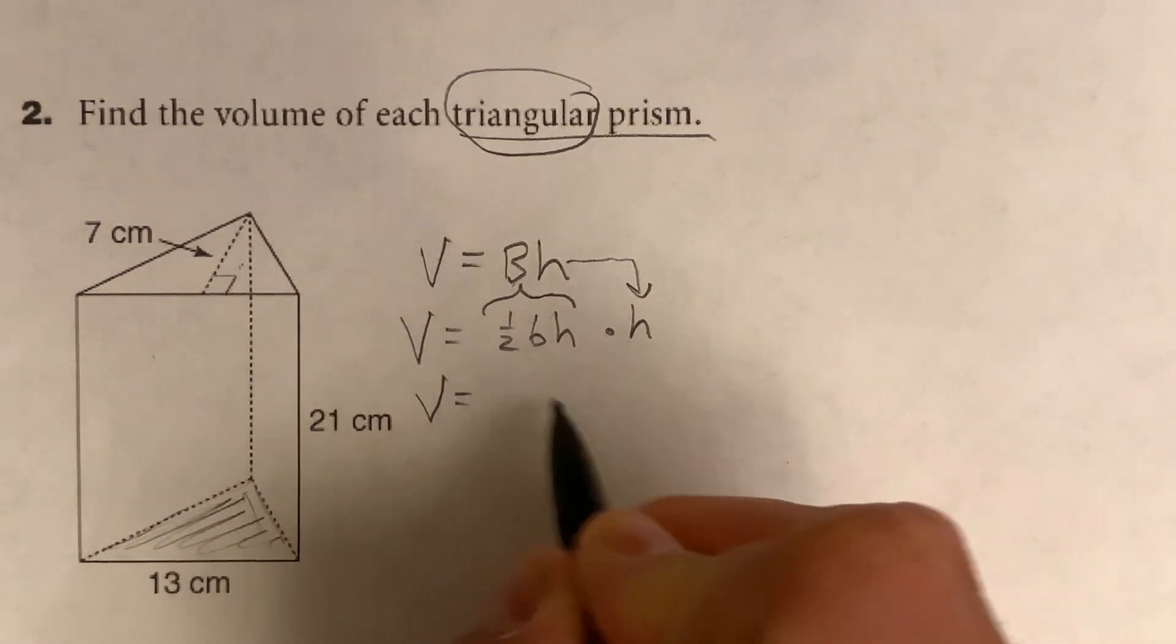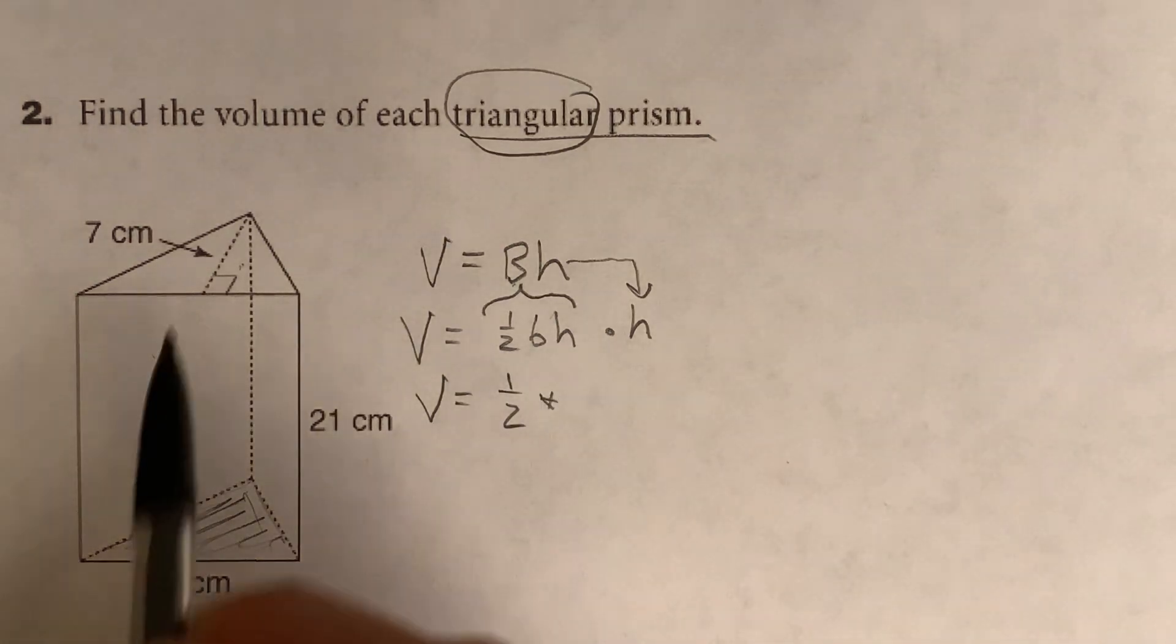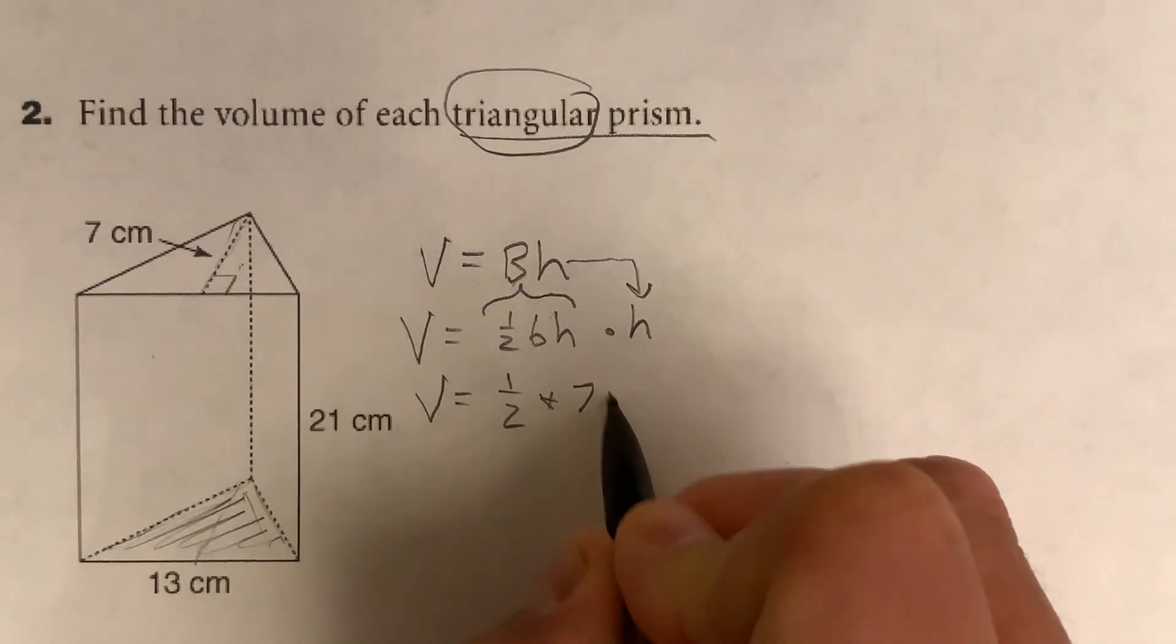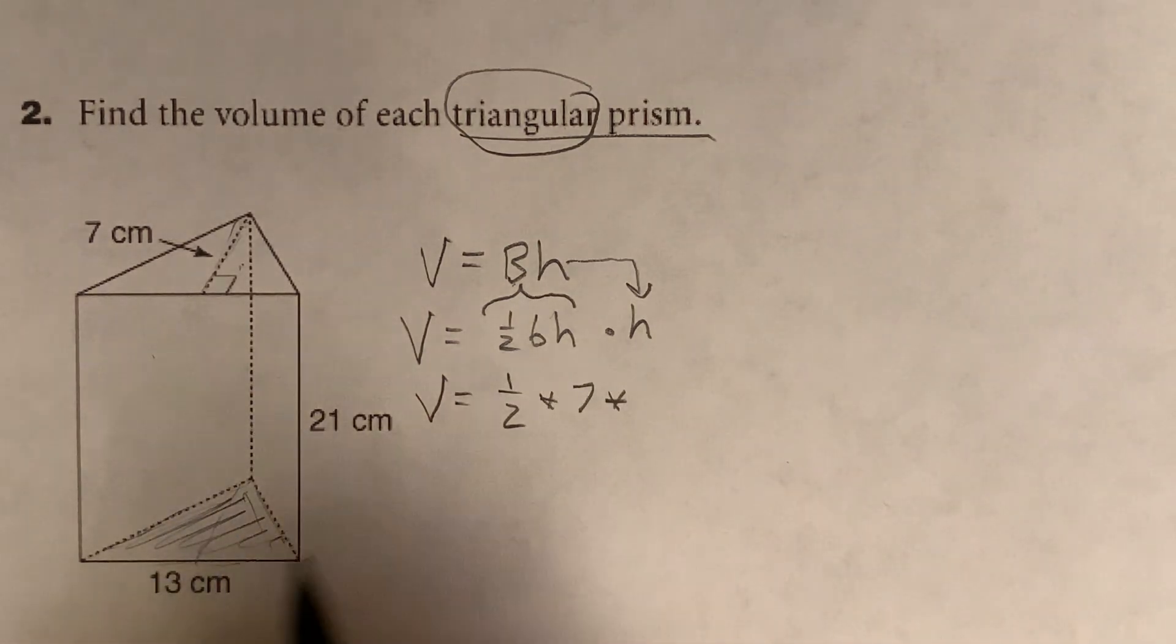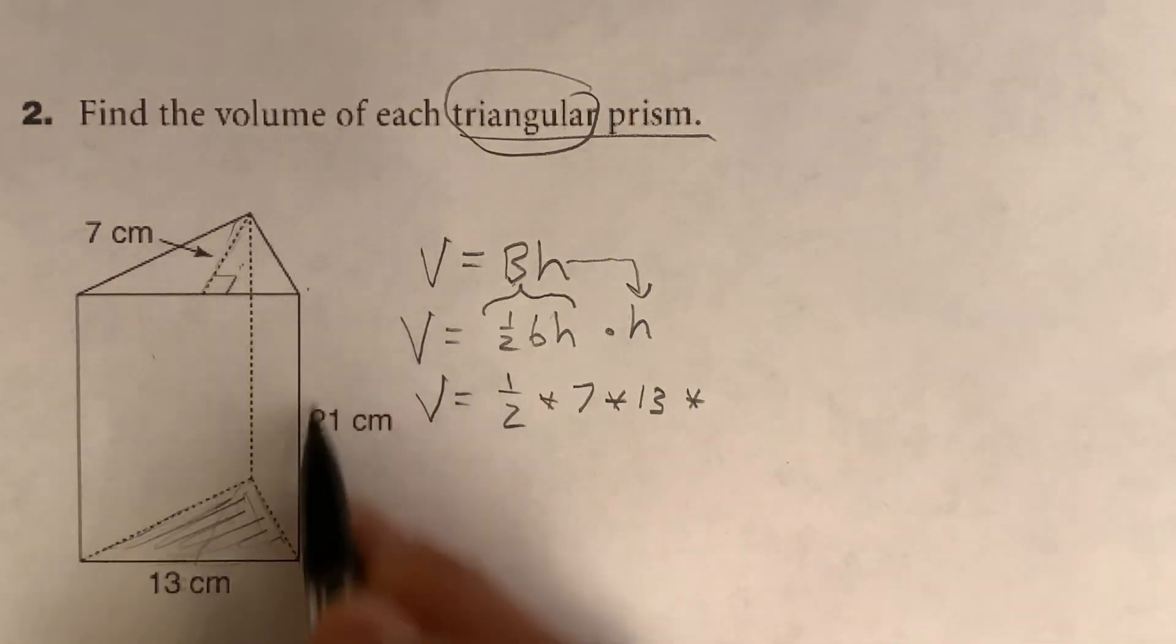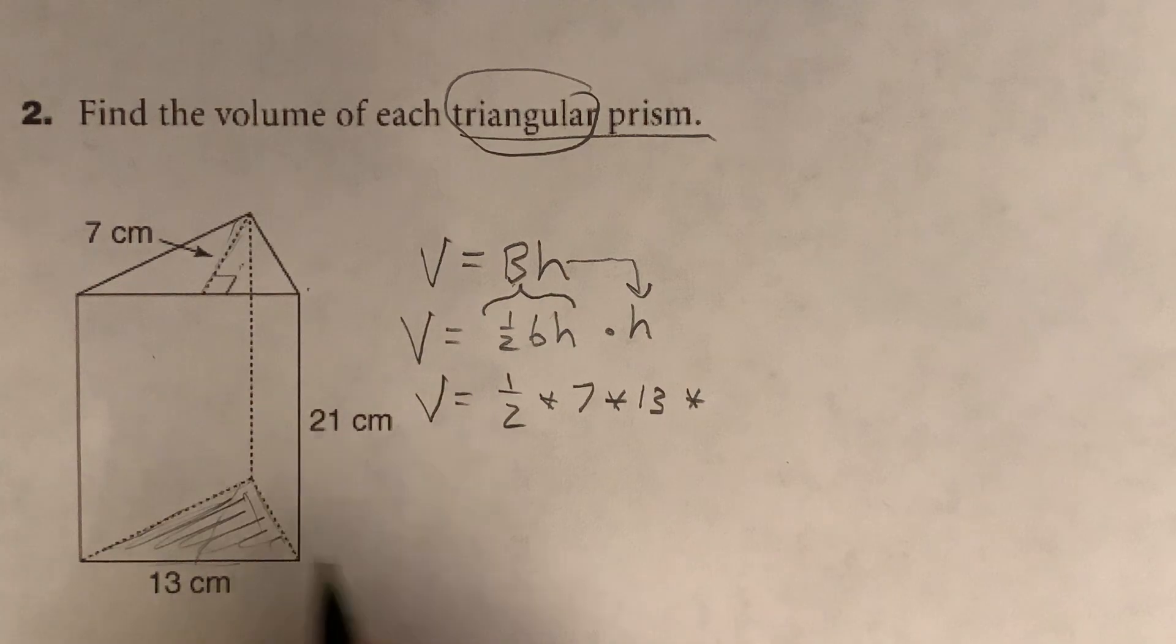So let's start with this. A half goes right in there easily. Now the base and height of the triangle. Well, this is the height. It's seven. See, it's that seven, the same there. The base is 13. It doesn't really matter which order you do this in. And then the height of the prism is the distance between the bases. That's the 21.